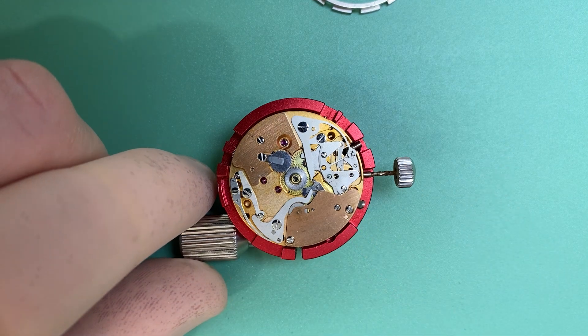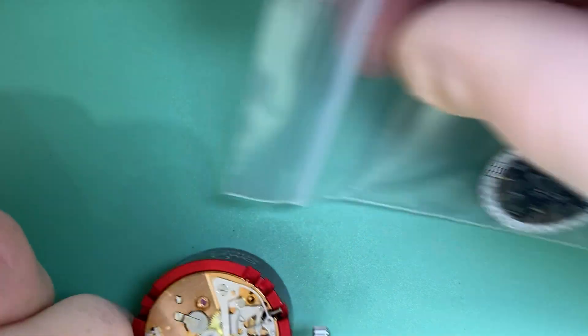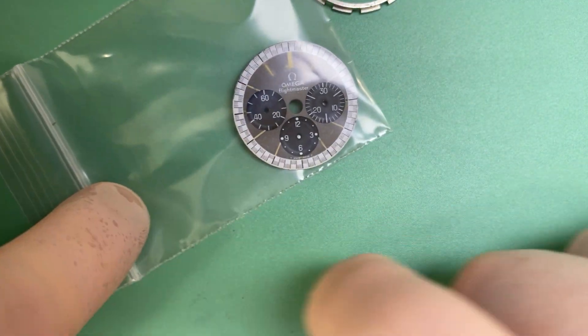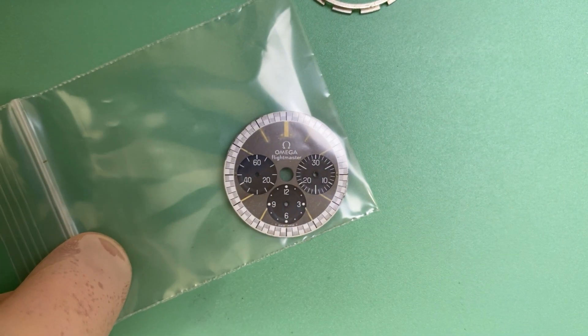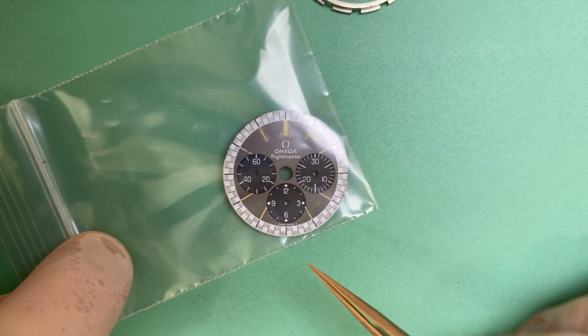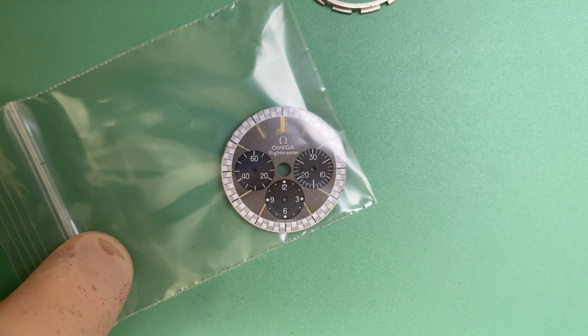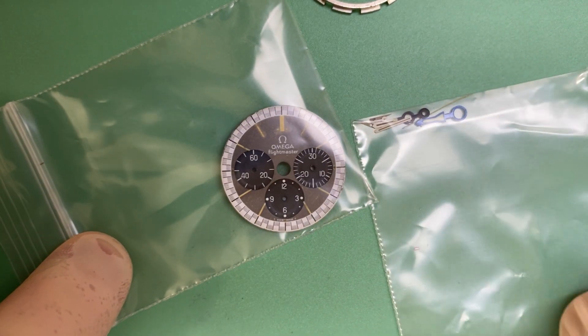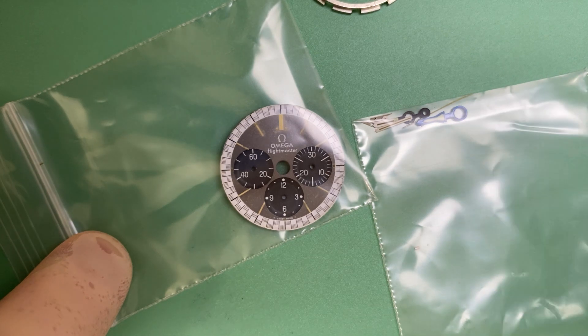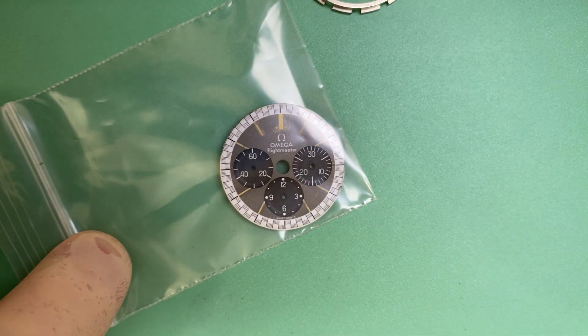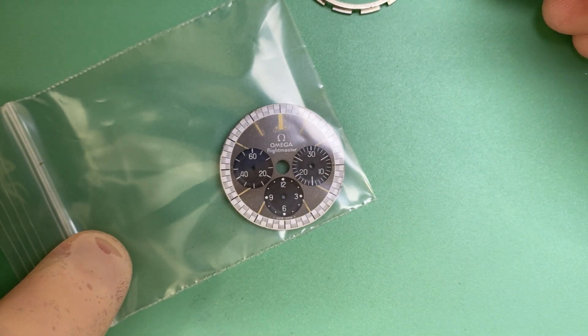So what's all this for? Well, if we have a look at the Flight Master dial, it has a relatively similar dial to another Speedmaster, except with the introduction of another hand. We have a 24-hour hand, or a second time zone hand, that we use on the watch.